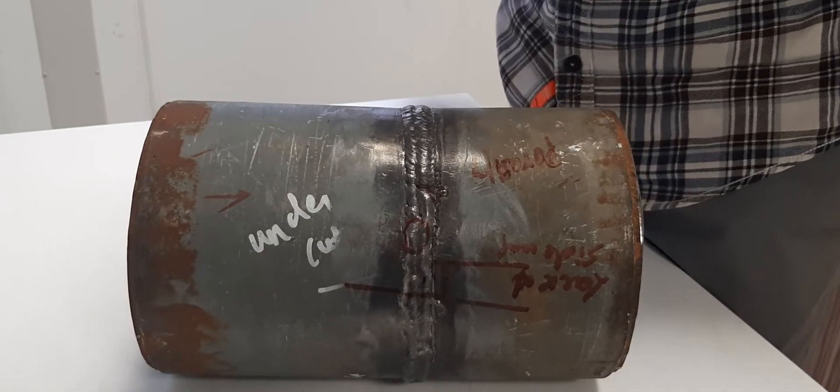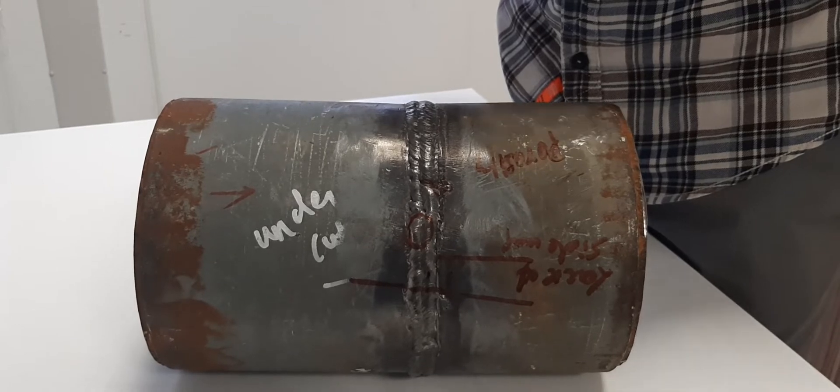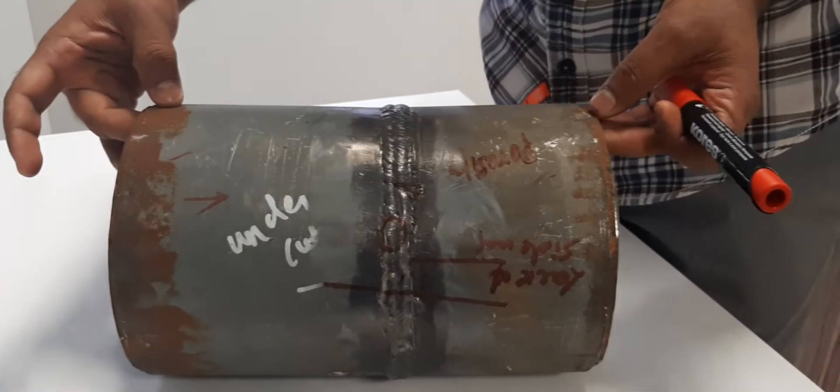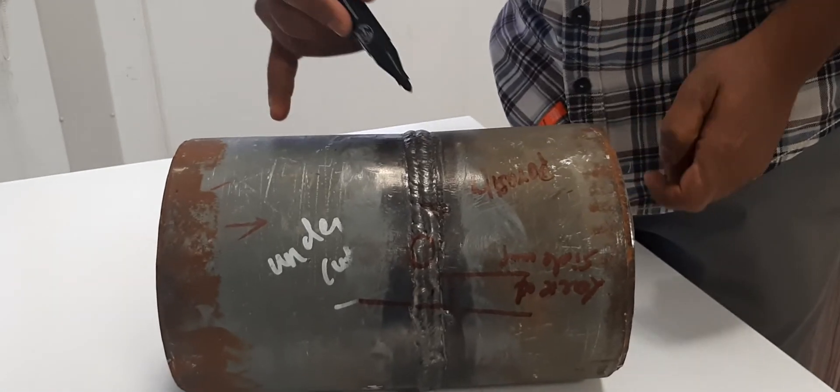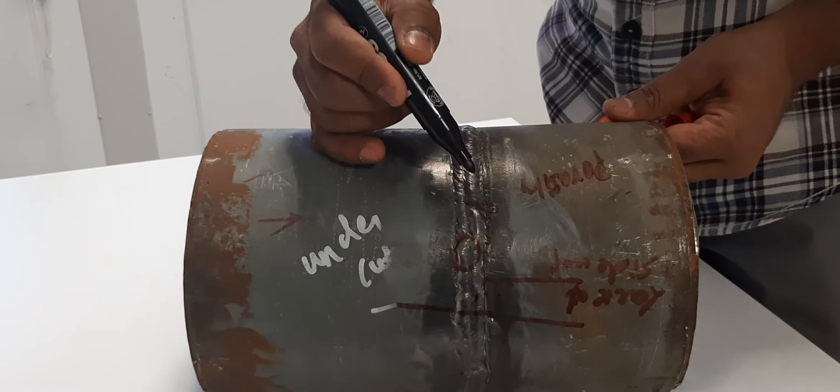Hi viewers, today I'll share something about how to read visual weld inspection. This is a six-inch pipe single butt joint. First one is porosity.